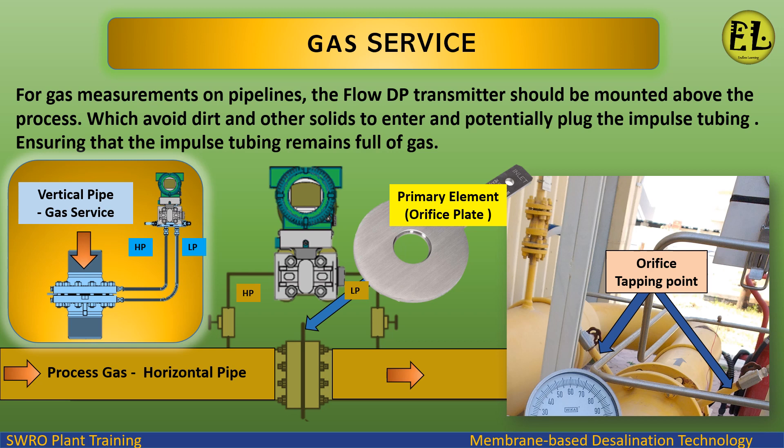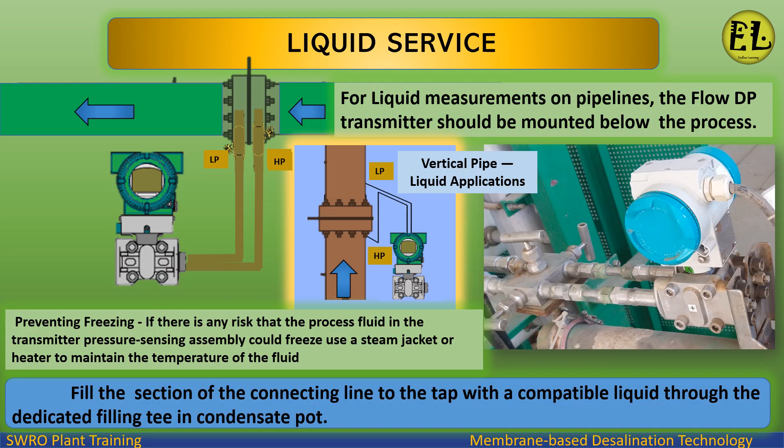For liquid service, for liquid measurements on pipelines, the flow DP transmitter should be mounted below the process. Fill the section of the connecting line to the tap with a compatible liquid through the dedicated filling tee in the condensate pot. To prevent freezing, if there is any risk that the process fluid in the transmitter pressure sensing assembly could freeze, use a steam jacket or heater to maintain the temperature of the fluid. DP flow meter installation for horizontal and vertical pipelines are shown.